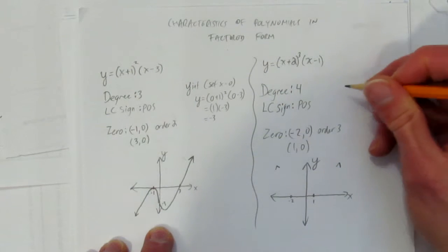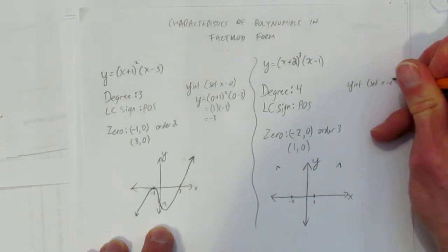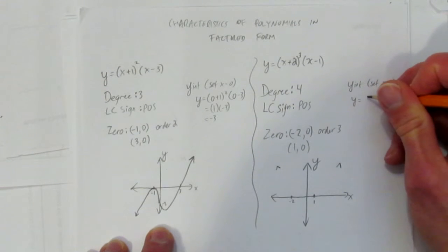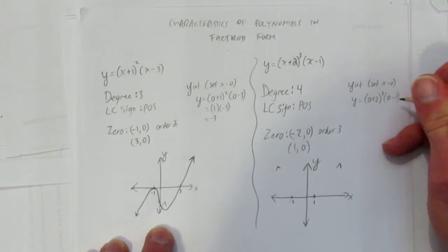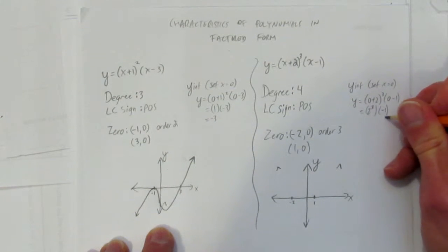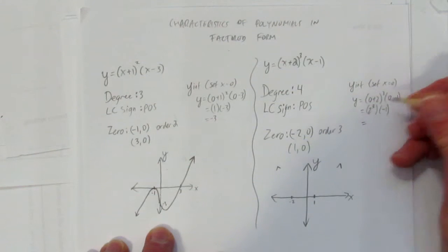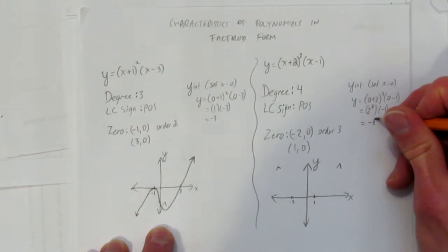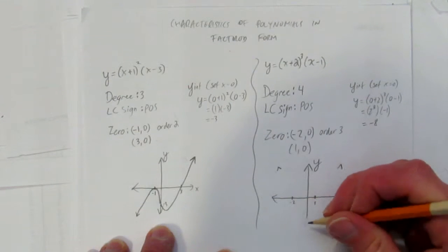Why don't we get the y-intercept now, just to see. For the y-intercept, set x equal to 0. So y is going to be 0 plus 2 cubed, 0 take away 1, which equals... You get 2 cubed here, which you could solve, or I'll do an extra step. 2 cubed times negative 1. That's going to be 2 to the power of 3. You can use your calculator, but that's 8. Times negative 1 is negative 8.